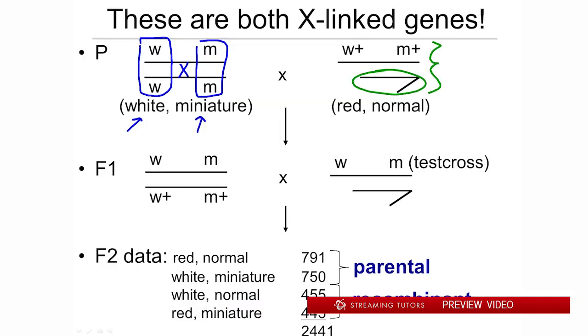The bottom line is we're crossing a white miniature female over here with a red-eyed normal male. Remember we used that term hemizygous for males with respect to genes located on the X chromosome because he only has one copy. He's w plus, which is the wild type red-eyed color, and he's m plus, which means his body type is normal, not miniature.